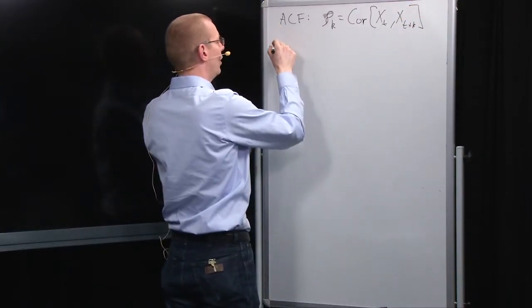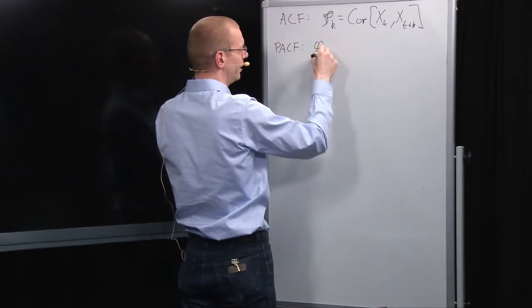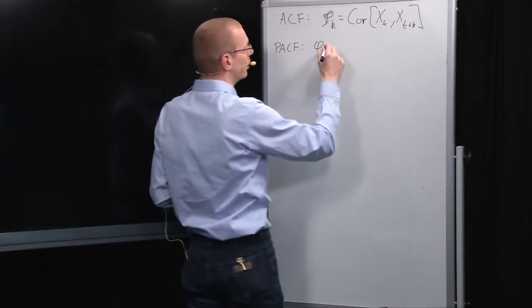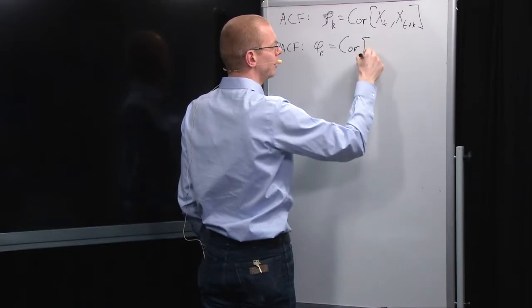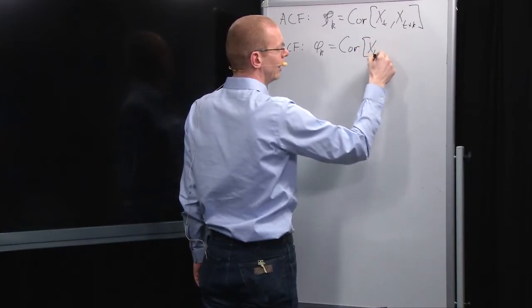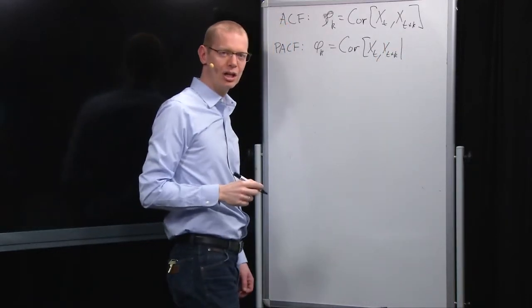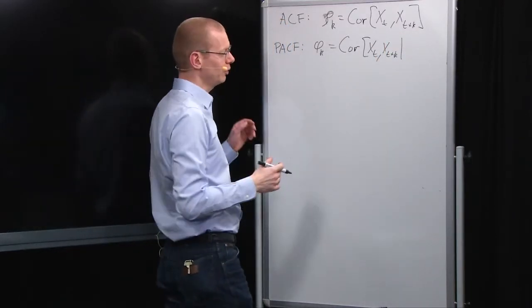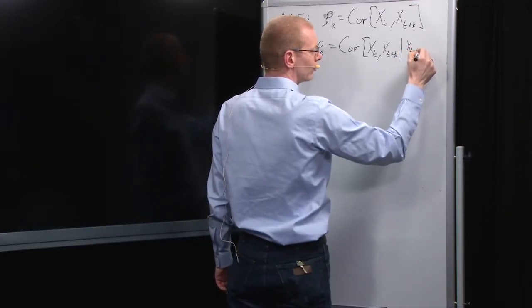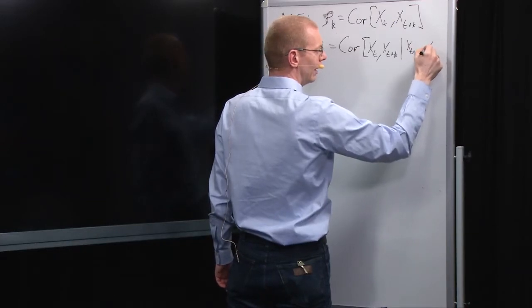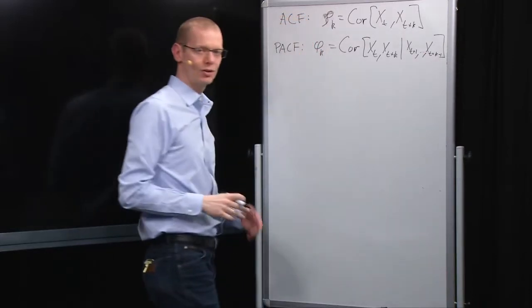Now the partial autocorrelation function is quite similar. We call it phi k or phi kk sometimes, and it's again the correlation between x t and x t plus k, but conditioning on all the observations that are in between. So conditioning on x t plus 1 to x t plus k minus 1.